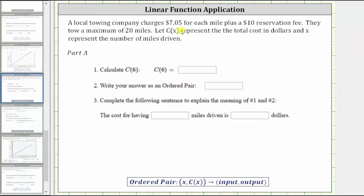A local towing company charges $7.05 for each mile, plus a $10 reservation fee. They tow a maximum of 20 miles. Let C of X represent the total cost in dollars, and X represent the number of miles driven. Because the cost is $7.05 per mile and X is the number of miles, plus the $10 reservation fee, the total cost C of X equals 7.05 times X plus 10.